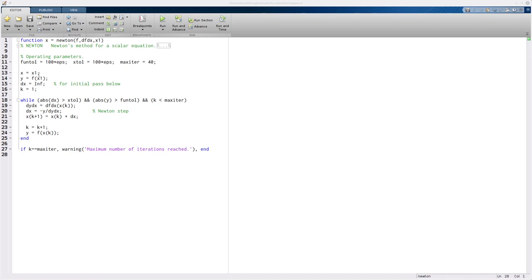It starts off just being the single number x1, y is f at that value, dx is where I'm going to store the difference between one step to the next. I'm going to set that to infinity so that the first time through the loop I'm guaranteed to go through. And then k is a counter for the number of iterations I'm on.